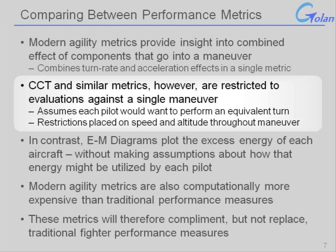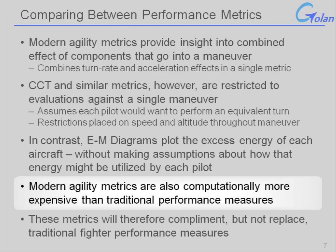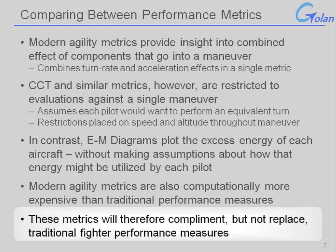In the example given previously, there were altitude restrictions that an actual pilot wouldn't necessarily be limited to. In contrast, an EM diagram plots excess energy for each aircraft without making any assumption about how that excess energy might be utilized by an individual pilot — which is part of what makes it so simple, elegant, and attractive, because it doesn't assume both pilots flying different aircraft would want to fly the same maneuver in exactly the same way. The modern agility metrics are also more expensive, and therefore will continue to complement, not replace, traditional measures of aircraft performance.